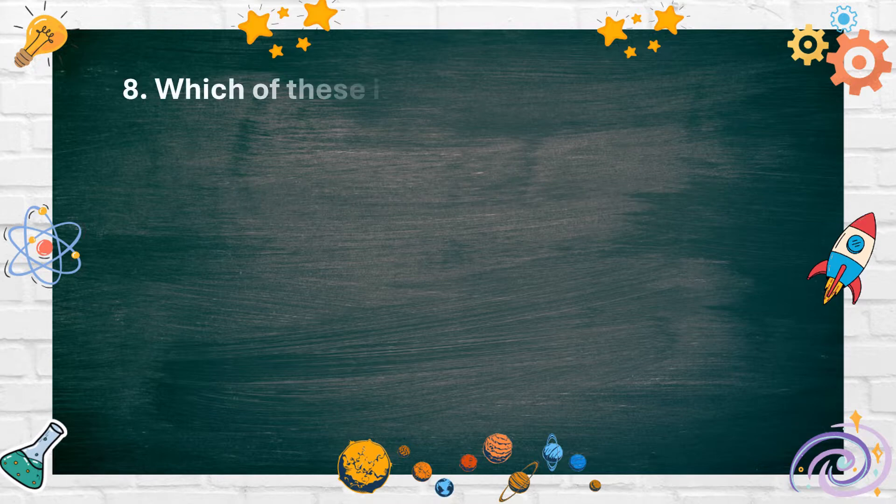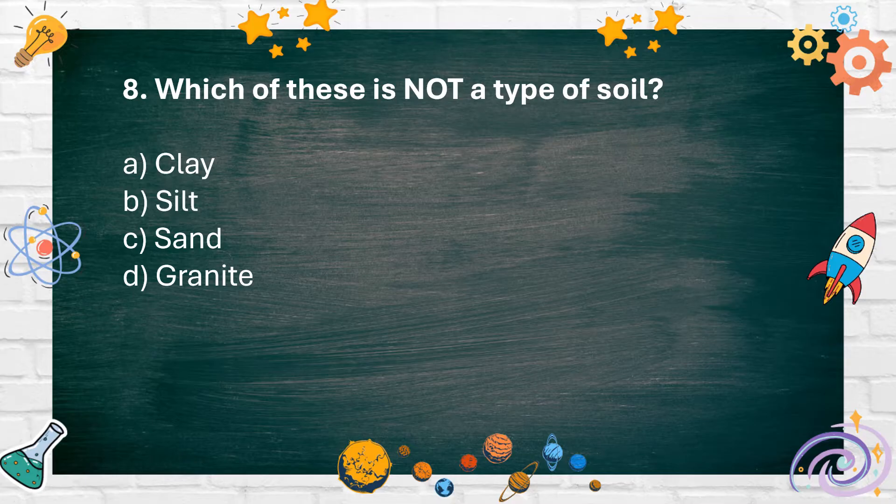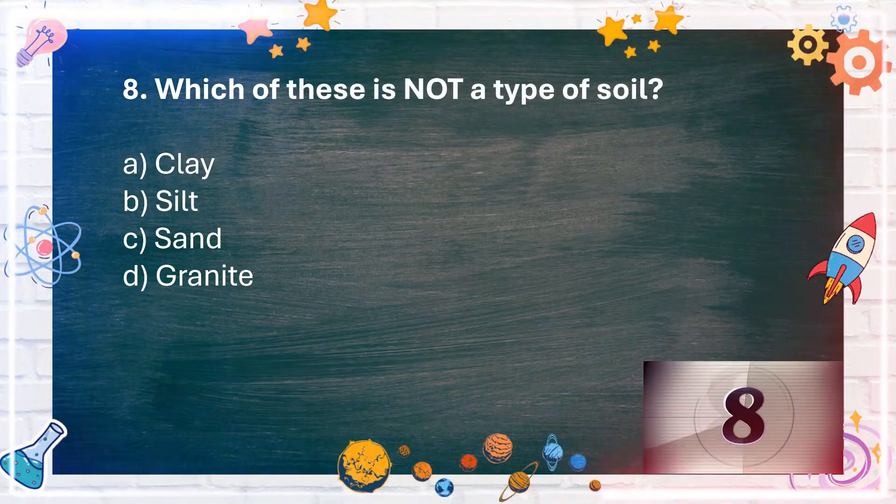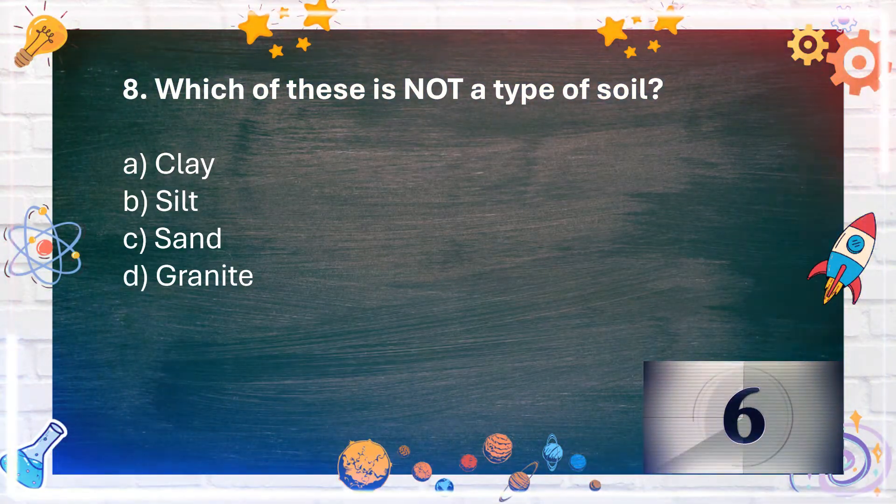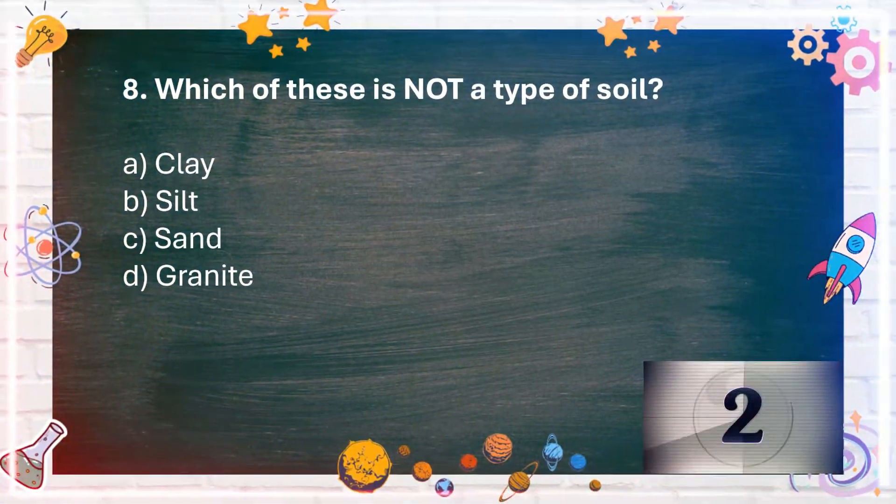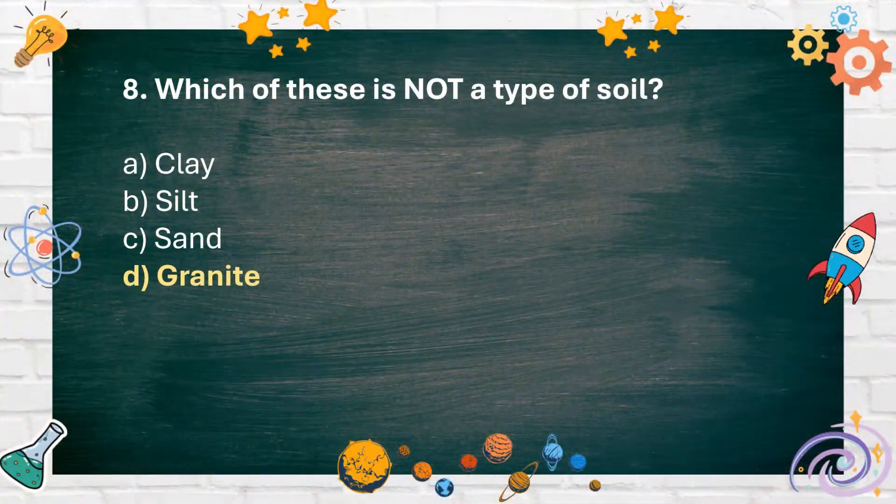Number 8: Which of these is not a type of soil? A. Clay, B. Silt, C. Sand, D. Granite. The answer is D. Granite.